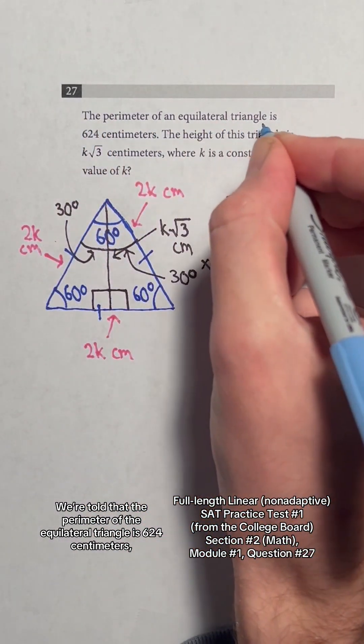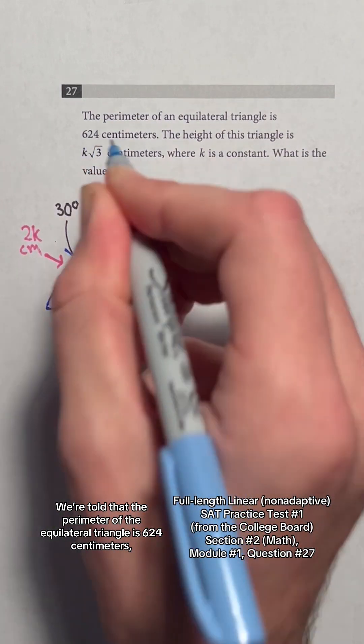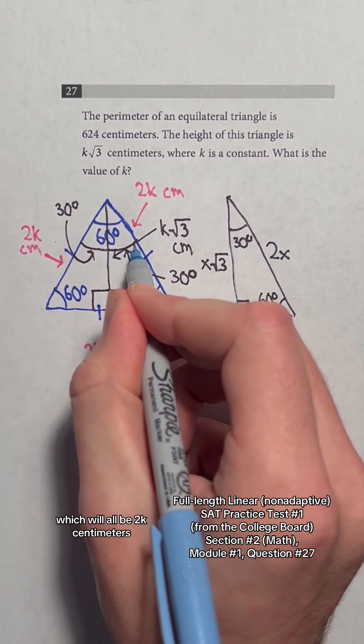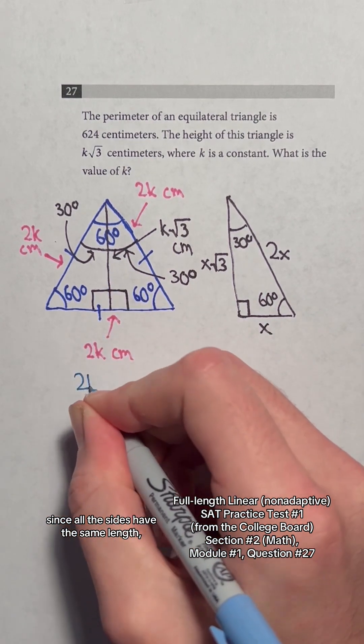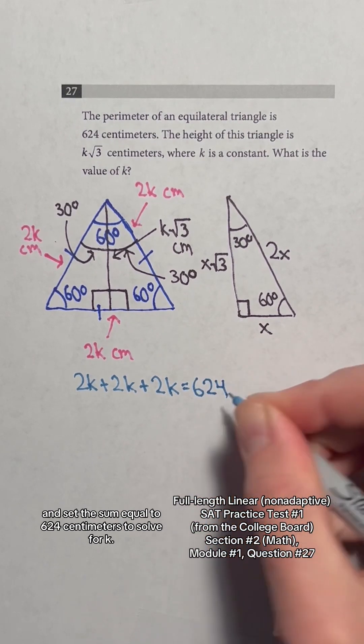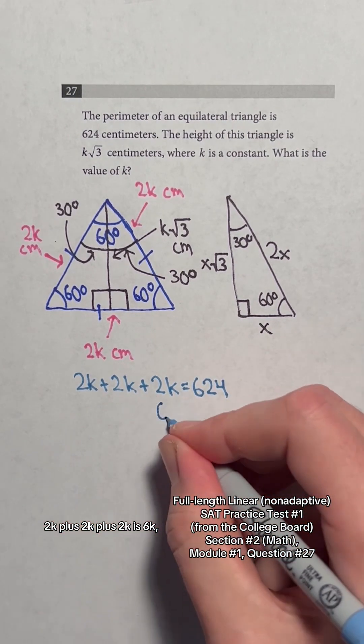We're told that the perimeter of the equilateral triangle is 624 centimeters, so we can add up the lengths of the sides of the equilateral triangle, which will all be 2k centimeters, since all the sides have the same length, and set the sum equal to 624 centimeters to solve for k. 2k plus 2k plus 2k is 6k.